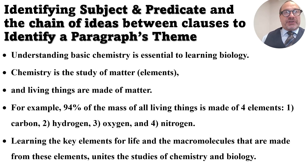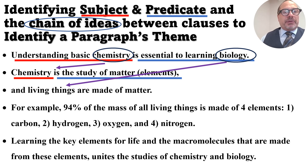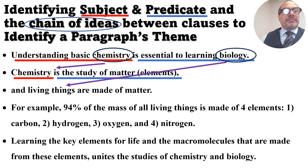I'm sure your English teachers have gone over subject and predicate. The subject is what the sentence is talking about, and the predicate is the information about what you're talking about. We're underlining the subject with red and the predicate with blue, and then circling any ideas that are used in a later sentence to make connections. The verb in a sentence is usually where the clause breaks between subject and predicate. In the first sentence, the verb is 'is' — 'Understanding basic chemistry' is the subject, and 'is essential to learning biology' is the predicate.